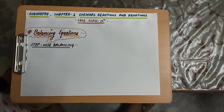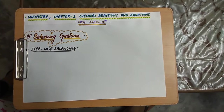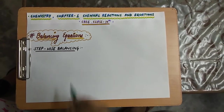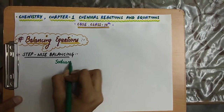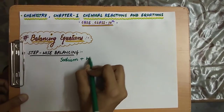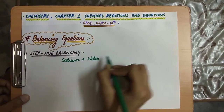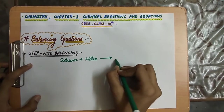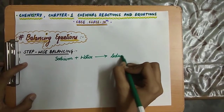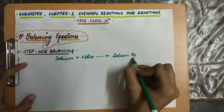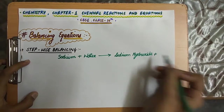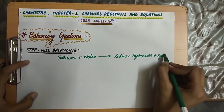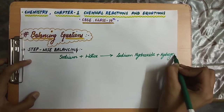First one: this is stepwise balancing. Let us take an example of a chemical equation. Sodium plus water gives sodium hydroxide plus hydrogen.